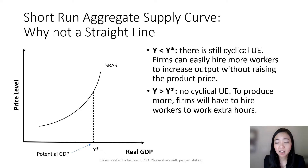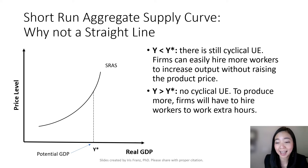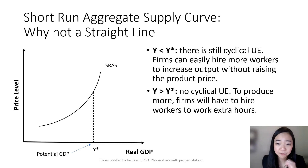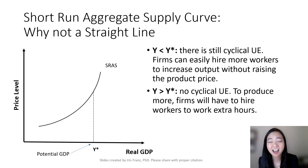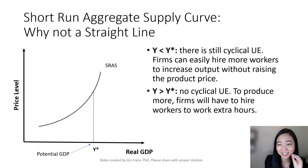After we reach our potential GDP, there is no more cyclical unemployment, meaning those who are trying to find a job already got a job. So if our economy still wants to produce more, now we will have to ask our workers to work extra hours. So even though in the short run our per unit wage remains the same, we want the workers to work more hours, we will have to pay them extra. And therefore, these firms will have to reflect this extra cost — these workers working extra hours — on their price. So our economy will have to increase the price level a lot in order to produce just a little bit more. That's the reason why our short run aggregate supply curve is not a straight line.